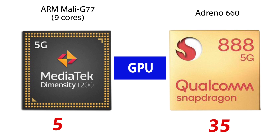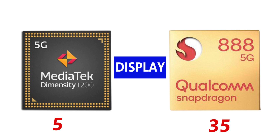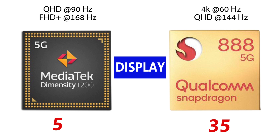At its best, the MediaTek Dimensity 1200 supports QHD display at 90Hz refresh rate, or you can set it to a full HD display with 168Hz refresh rate enabled. The Snapdragon 888 on the other hand supports up to 4K display at 60Hz refresh rate, or you can set it to a QHD display with 144Hz refresh rate. These two chipset displays are good, and as such I will leave the choice to be based on user preference.